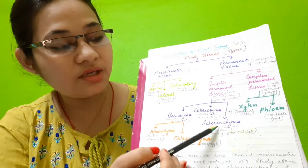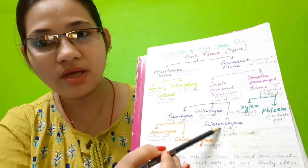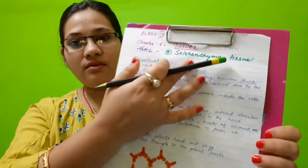Today we will study about sclerenchyma and we will differentiate between collenchyma and sclerenchyma. Simple permanent tissues are such types of tissues which are made up of only one type of cells. They are of three types: parenchyma, collenchyma, and sclerenchyma. Today's topic is sclerenchyma.